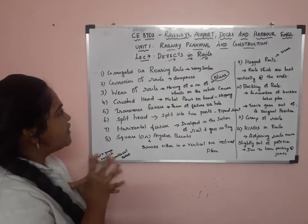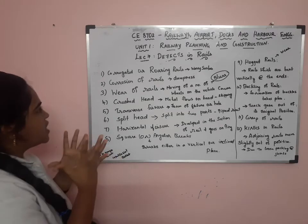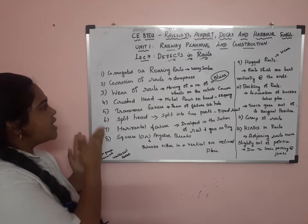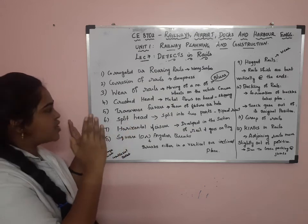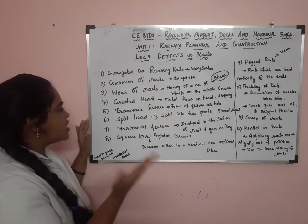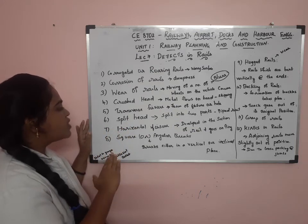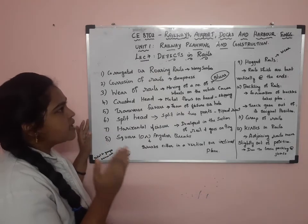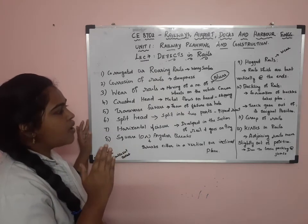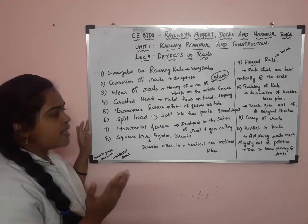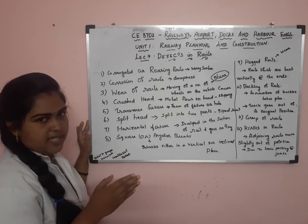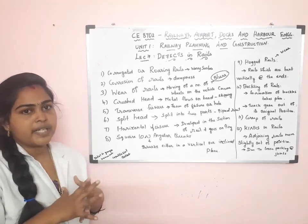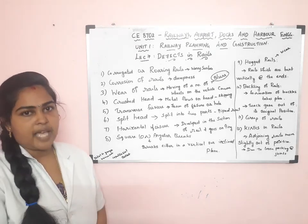These are the defects in rails: Corrugated or Roaring Rails, Corrosion of Rails, Wear of Rails, Crushed Head, Transverse Fracture, Split Head, Horizontal Fracture, Square or Angular Breaks, Hogged Rails, Buckling of Rails, Creep of Rails, and Kinks in Rails. In the next class, we will discuss about the geometric design of railways. Thank you.